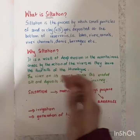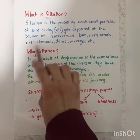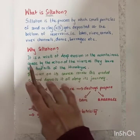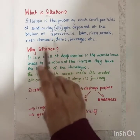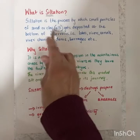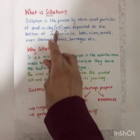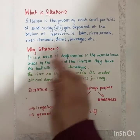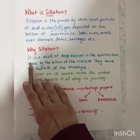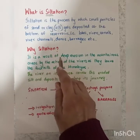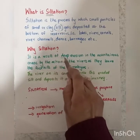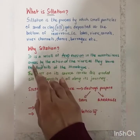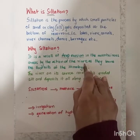Now why is silt getting deposited at the bottom of the reservoirs? Siltation is basically the result of deep erosion in the mountainous areas by the action of the rivers. What is silt? It's minute particles of sand or clay.